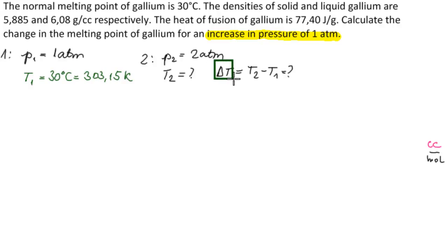What else are we given? We're given that rho of solid gallium is 5.885 grams per cubic centimeter, and rho of liquid gallium is 6.08 grams per cubic centimeter. And we're given the heat of fusion is equal to 77.40 joules per gram.